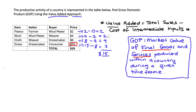And that's really the value added approach in a nutshell. Now, the total of $29 here is a red herring — this is not GDP. GDP is just the value of the final goods and services, which is only the dress here. The value of the intermediate goods and services — the fleece, the wool, the cloth — is already contained within that $15 price of the final good. So that's how we compute GDP by looking at value added. I hope the video helped. If it did, please like and subscribe. Thanks so much for watching.